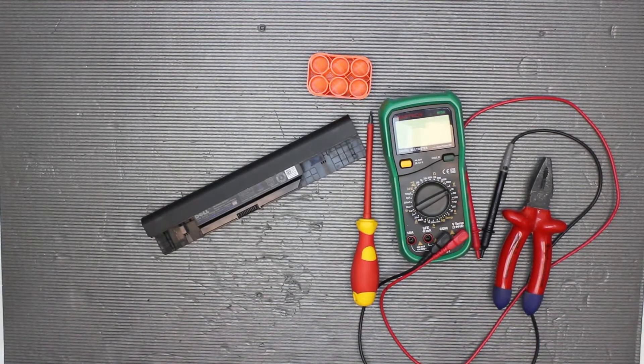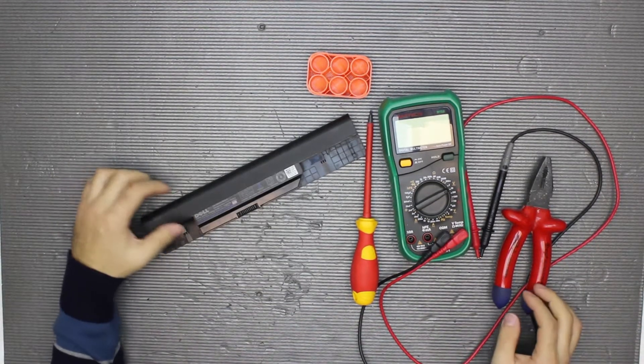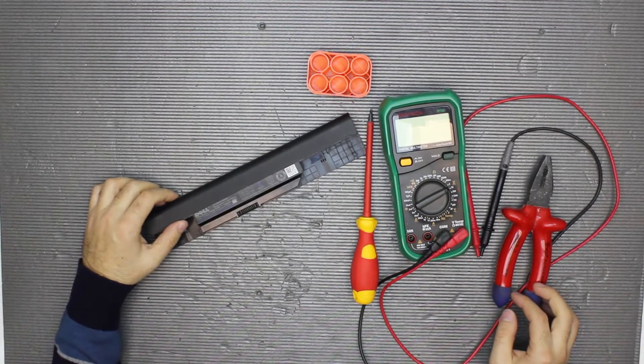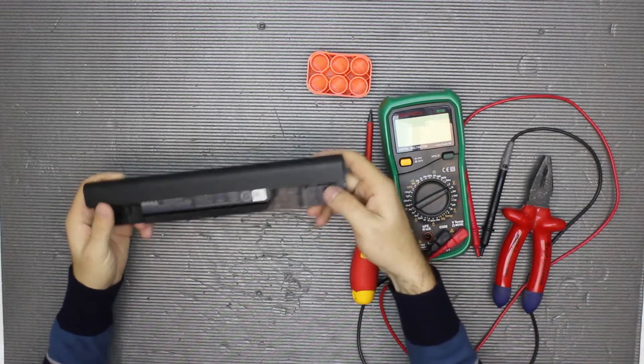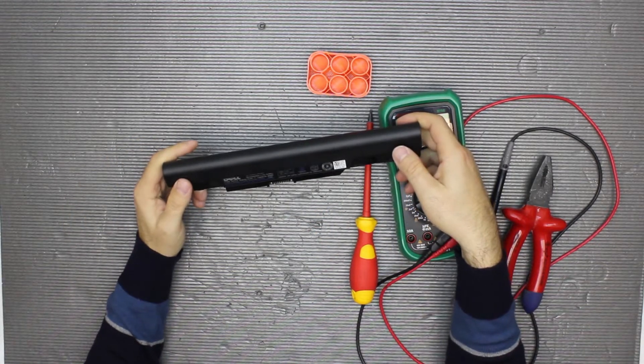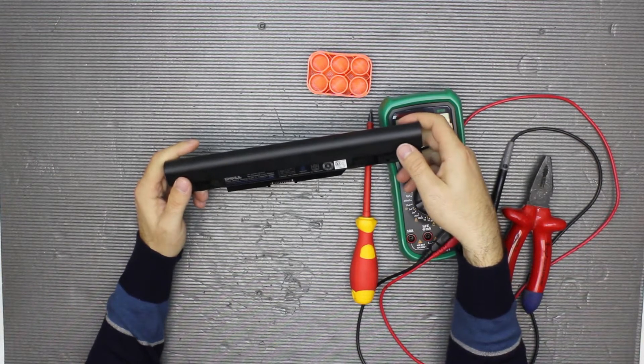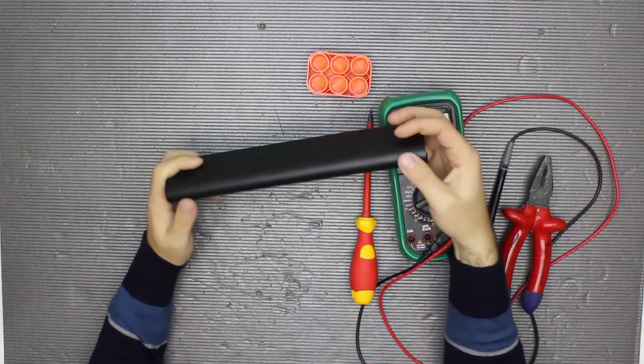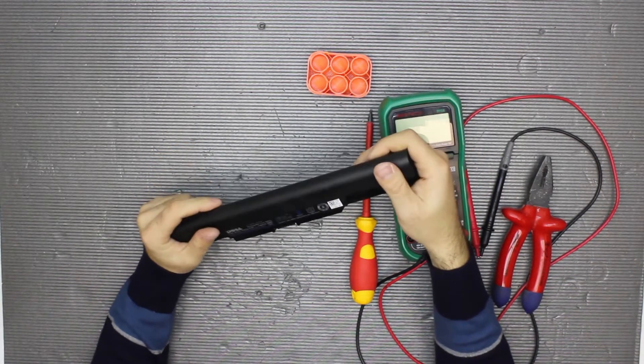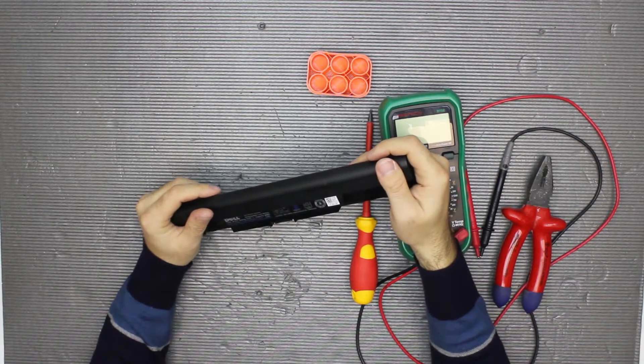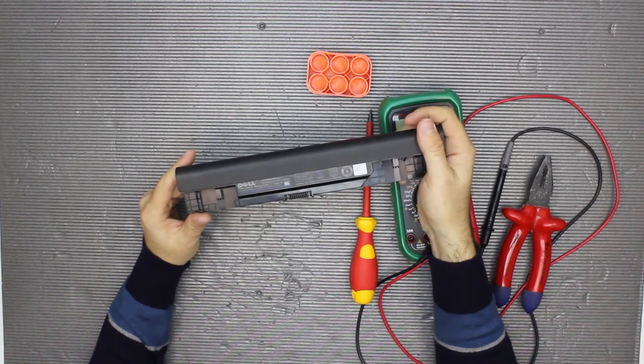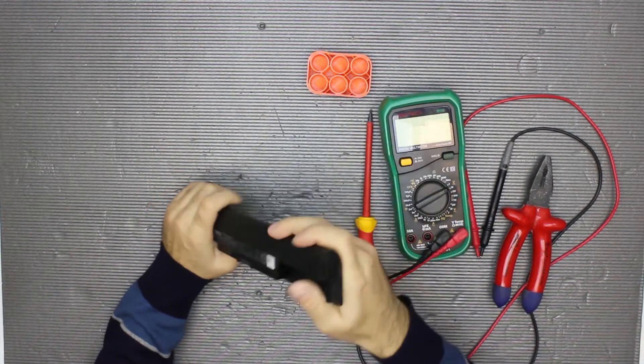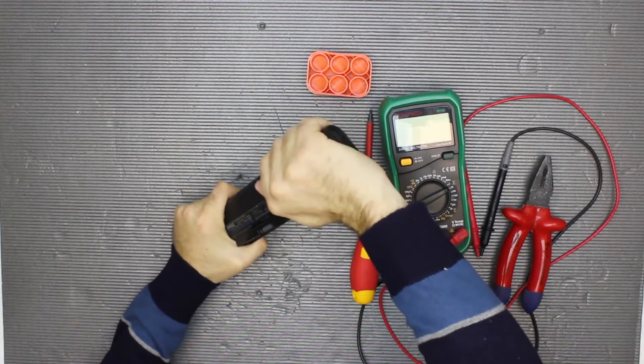Hey guys, next is this Dell battery. It's JKVC5, 10.8 volts, 48 watt hours, and should be 4100 milliamp hours. Most of the batteries which are 10.8 instead of 11.1 volts are quite old, but that's okay. Let's see.